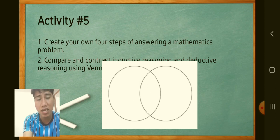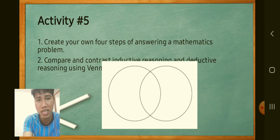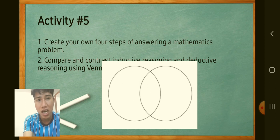In the Venn diagram, the middle section represents the similarities between inductive and deductive reasoning. The outer sections on each side represent the differences — what is unique to inductive reasoning and what is unique to deductive reasoning.